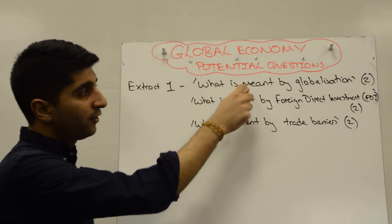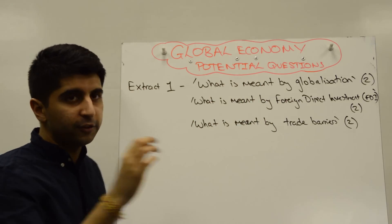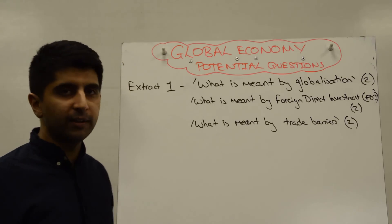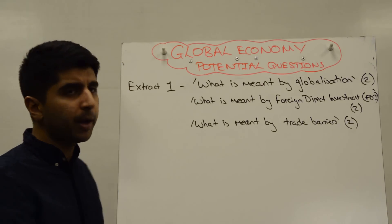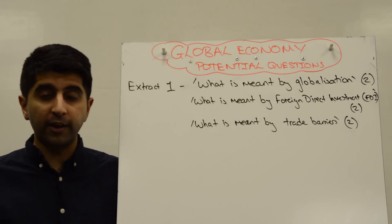So I won't be surprised if it's the first two of these three. I'm not so sure about trade barriers, but the first two definitely - what is meant by globalisation, what is meant by foreign direct investment, I think very likely. And if they came up, what do you need to do? You need to give an OCR approved definition word for word and you'll get your two marks.